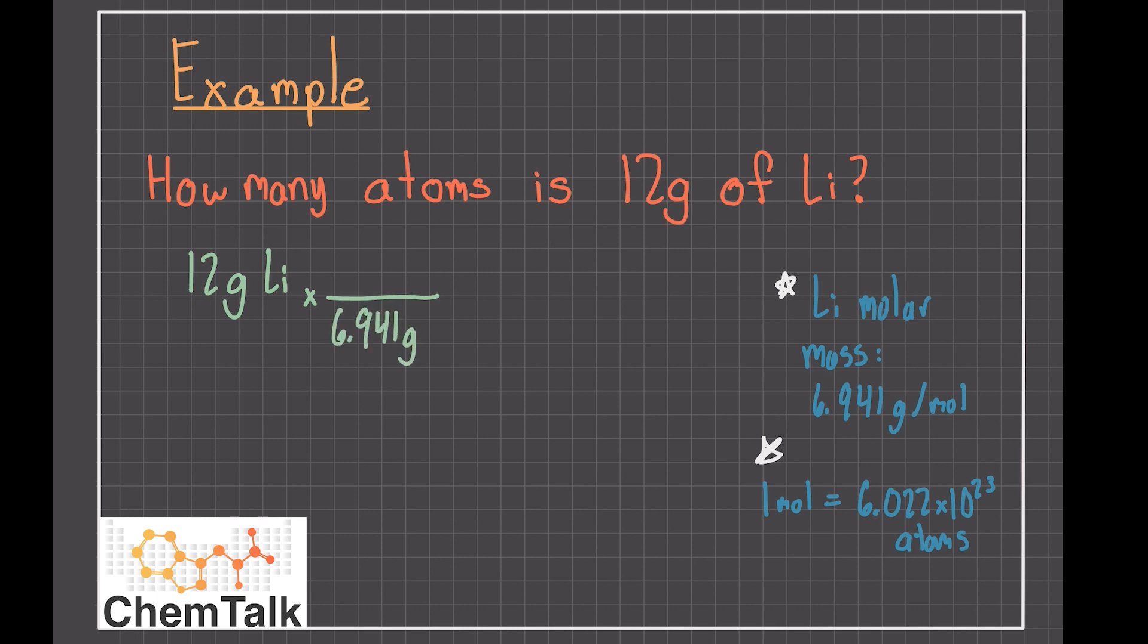We keep the same process as previous problems. We line up our conversion rates, making sure our units cancel out. In this case, we must flip the molar mass ratio in order to line up the grams of lithium on the bottom with the grams of lithium that we started with. We do the same thing with the moles of lithium and the atoms of lithium.